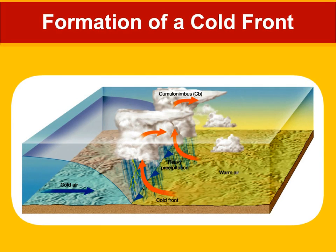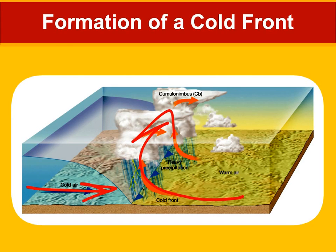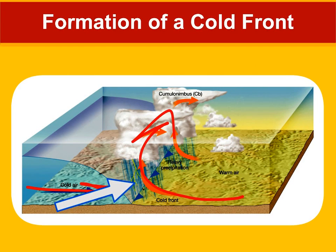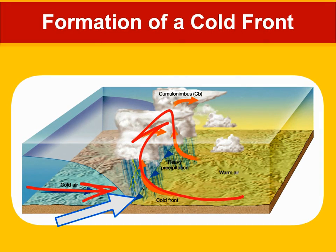Looking at the cold front: these come in quick. It's heavy air from the north — like a bulldozer. If we're experiencing nice warm weather, a cold front will come in and force that warm air up very, very quickly. As a result, we get heavy precipitation from cumulonimbus clouds. The symbol for a cold front is just a triangle — think of icicles when you see that symbol.